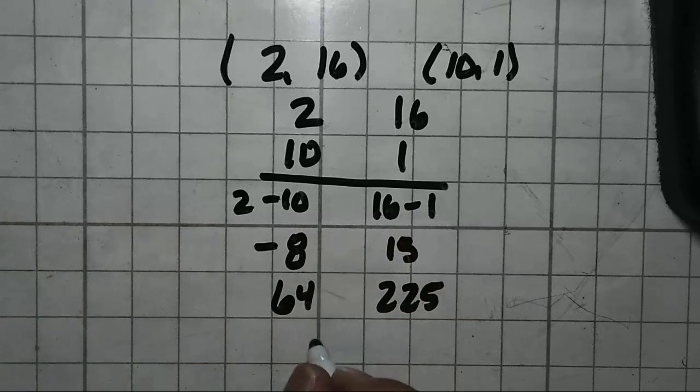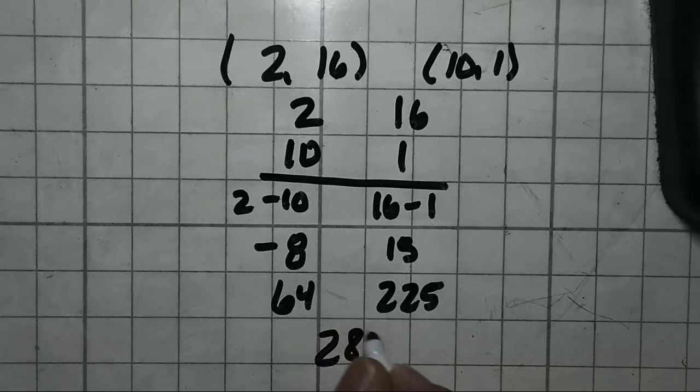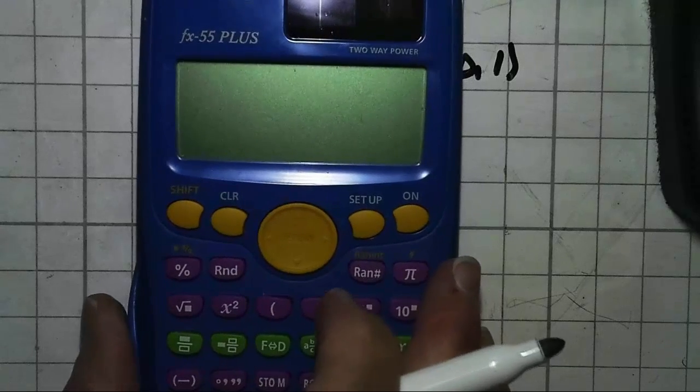Now if we add these together, 64 plus 225, we get 289. And if we take the square root of 289, you'll see it's a nice even number. Now let me show you a couple things.